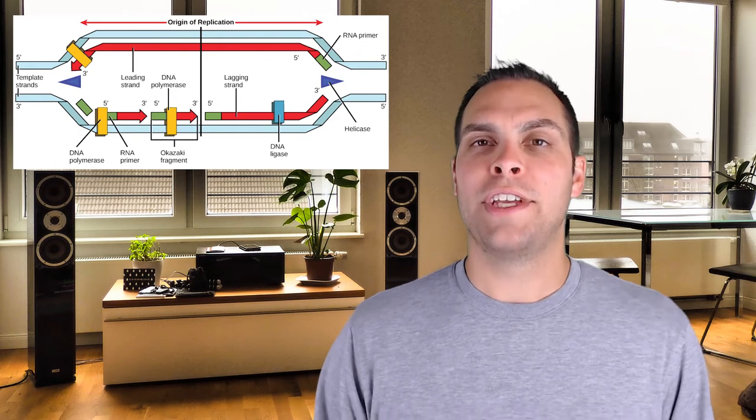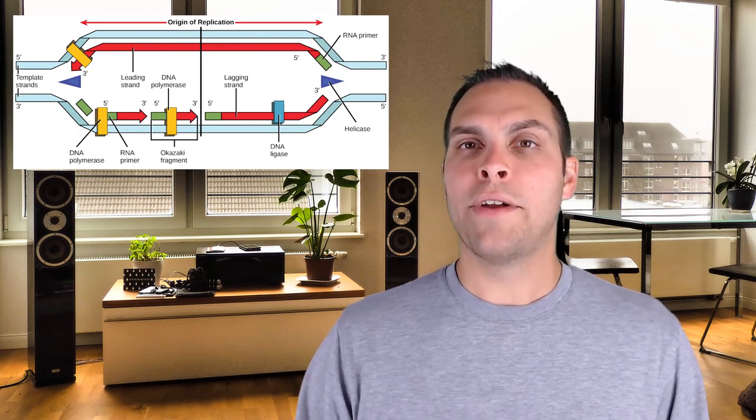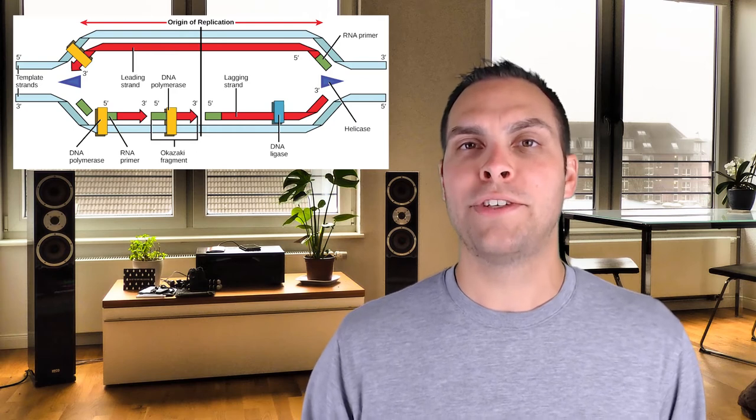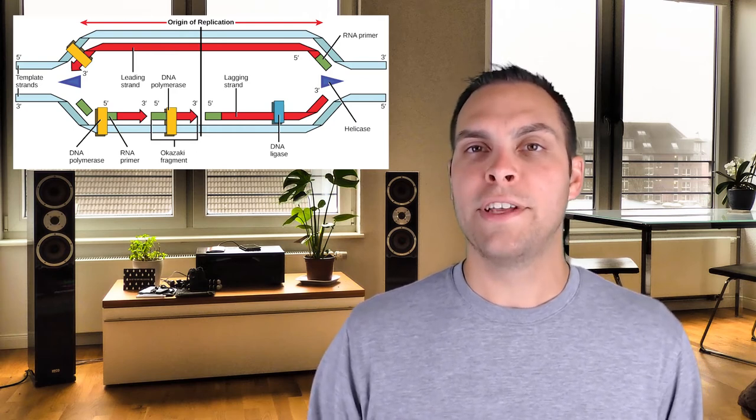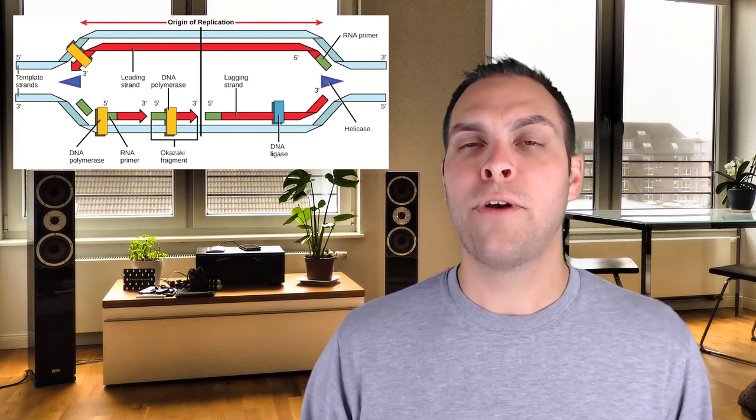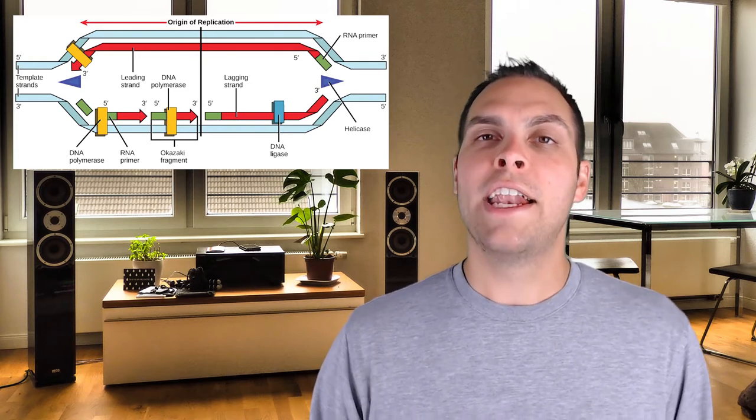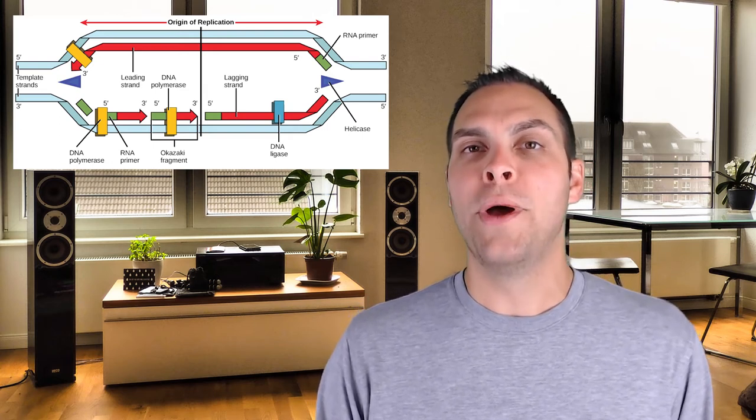In a prokaryotic circular chromosome, both replication forks continue to extend — with leading strand and lagging strand synthesis happening all the way around the bacterial chromosome — until the two replication forks essentially collide. At that point, the bacterial chromosome is completely replicated and you have two circular double-stranded DNA molecules replicated through the semi-conservative mechanism, with one strand being original parental DNA and one being the newly synthesized complementary strand. Each can then be divided into the two daughter cells during binary fission.